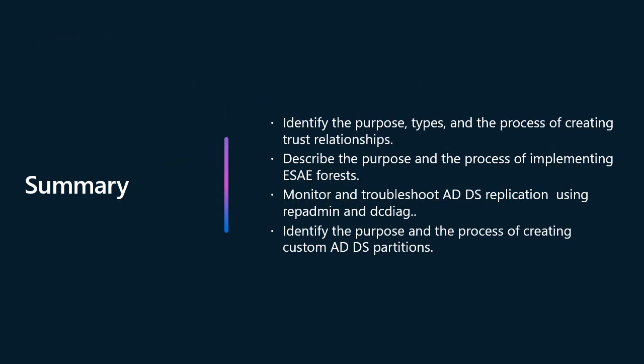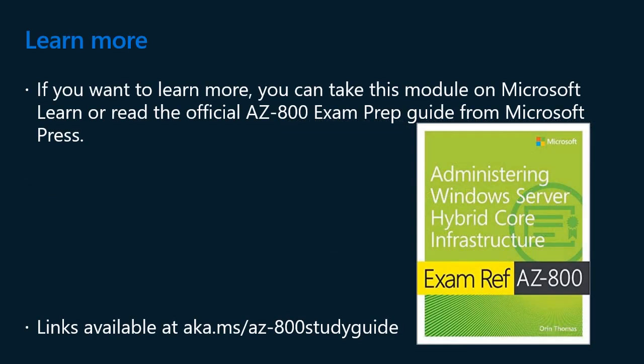In this module, we covered the following topics: identifying the purpose, types, and process of creating trust relationships; describing the purpose and process of implementing ESAE forests; monitoring and troubleshooting ADDS replication using Repadmin and DCDiag; and identifying the purpose and process of creating custom ADDS partitions. If you want to learn more, you can take this module on Microsoft Learn or read the official AZ-800 exam prep guide from Microsoft Press — links available at aka.ms/az-800studyguide. We publish new content regularly on this channel on topics related to Windows Server, Hybrid Cloud, Azure Infrastructure, and related certifications.